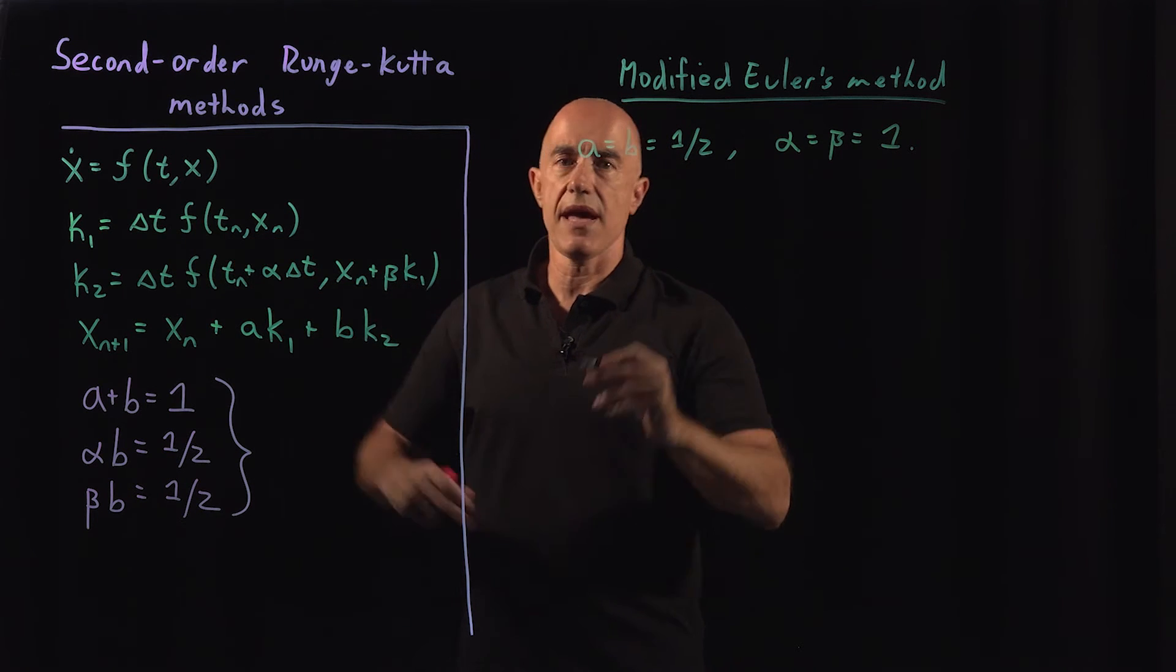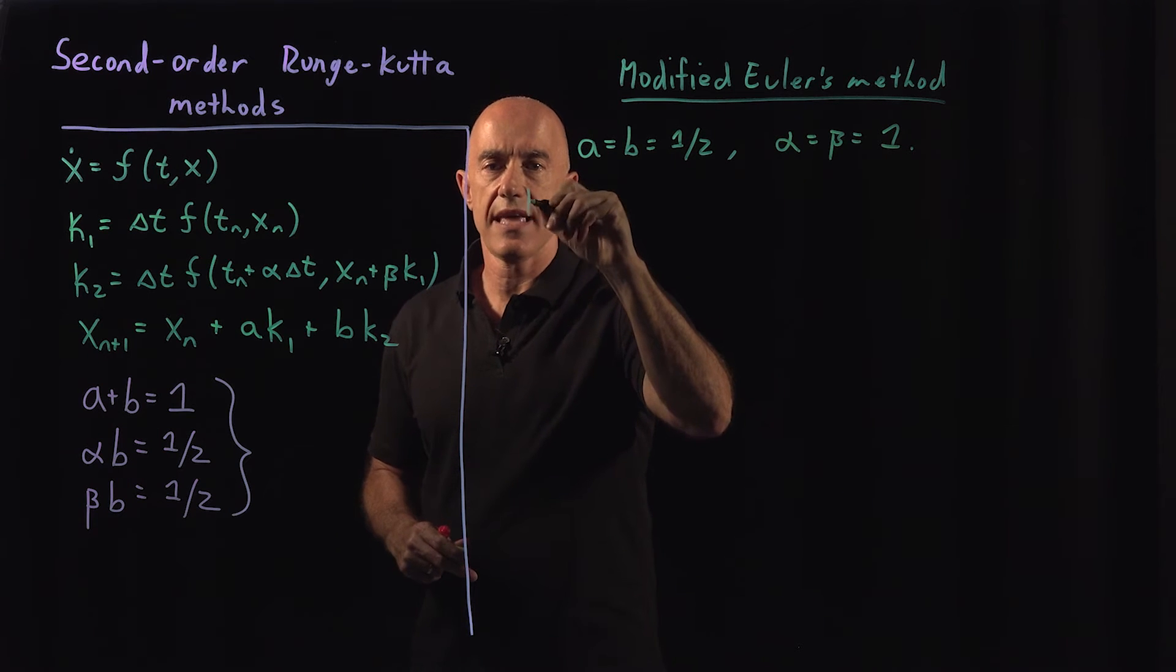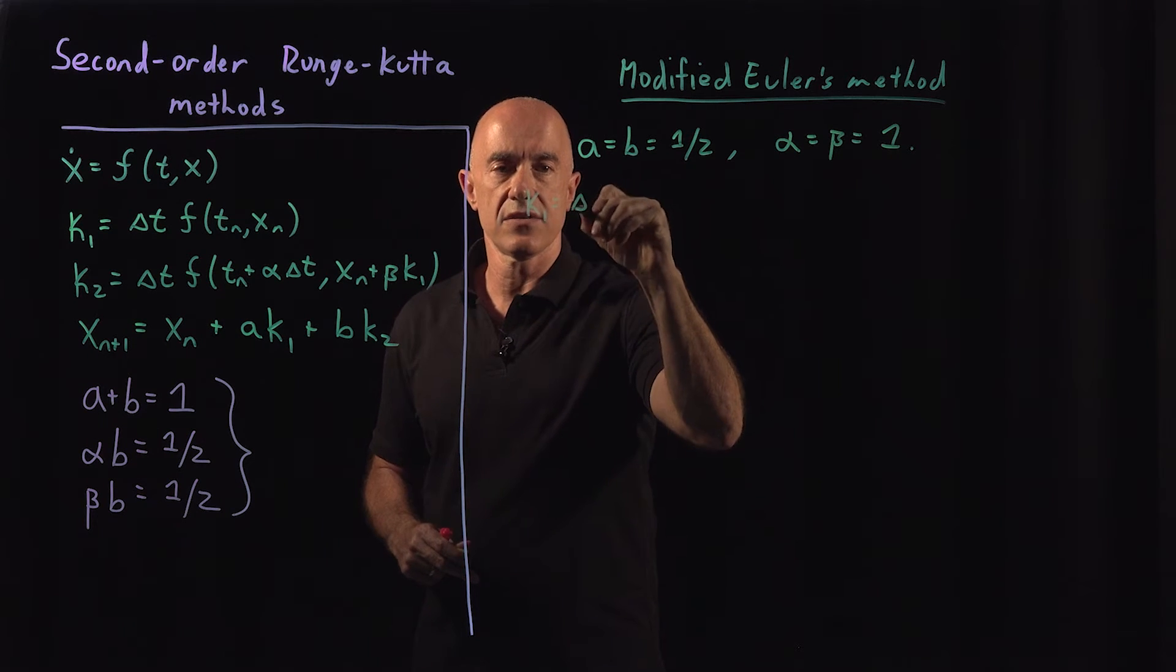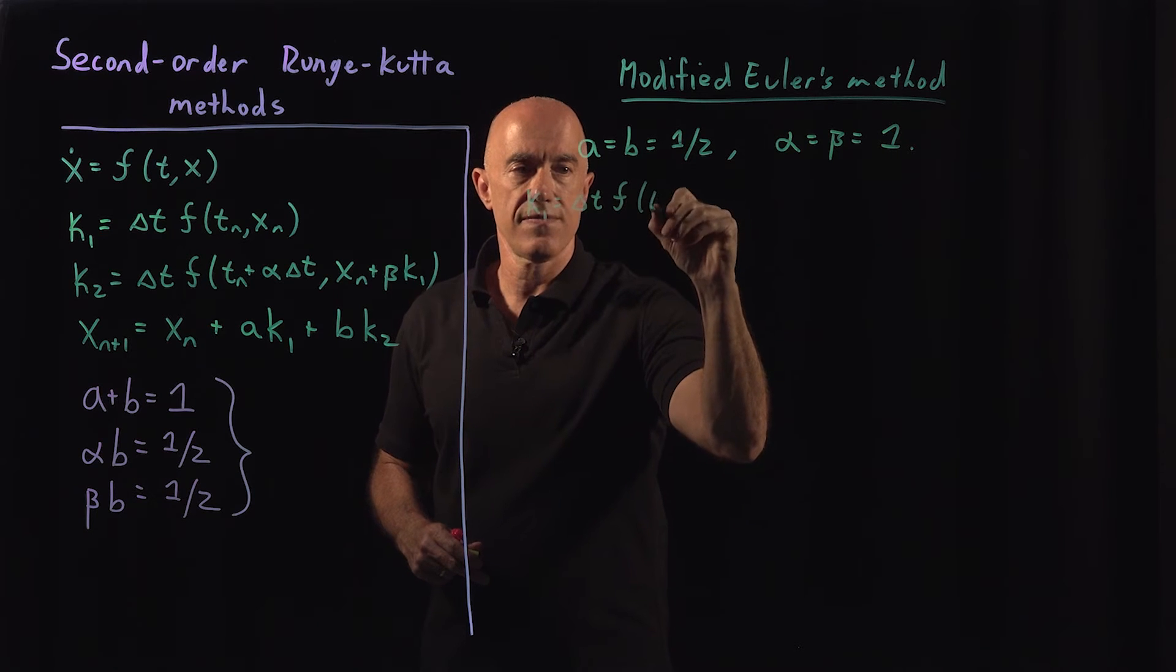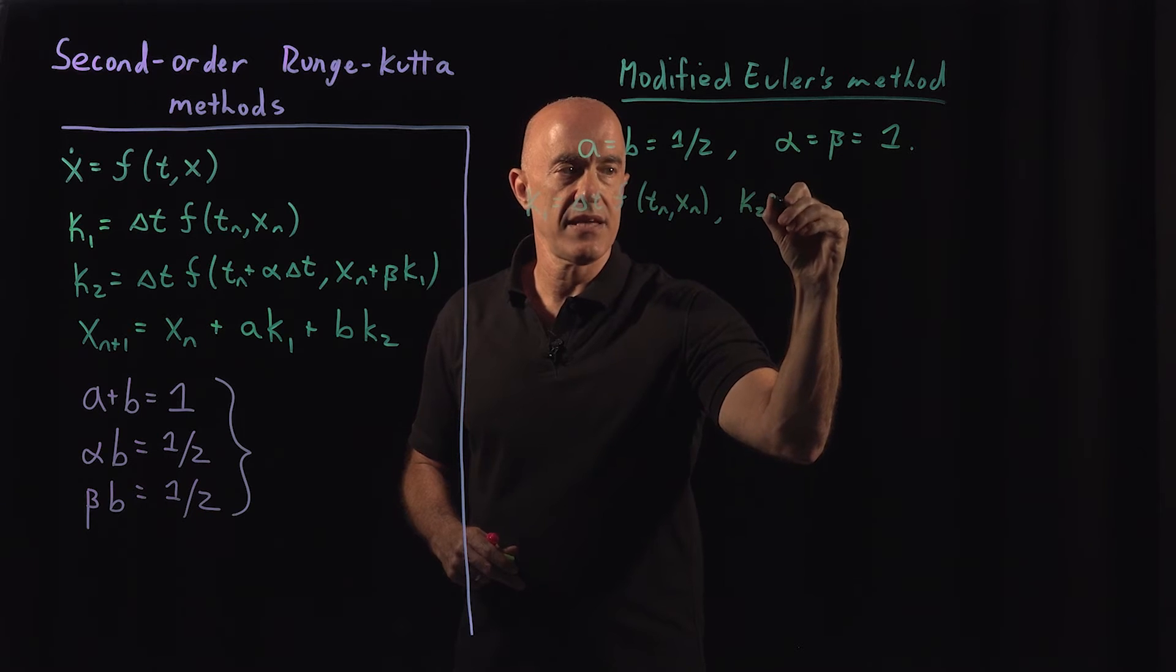Okay, so then what is the method? So the modified Euler's method then has k1 equals delta t f of (t_n, x_n).